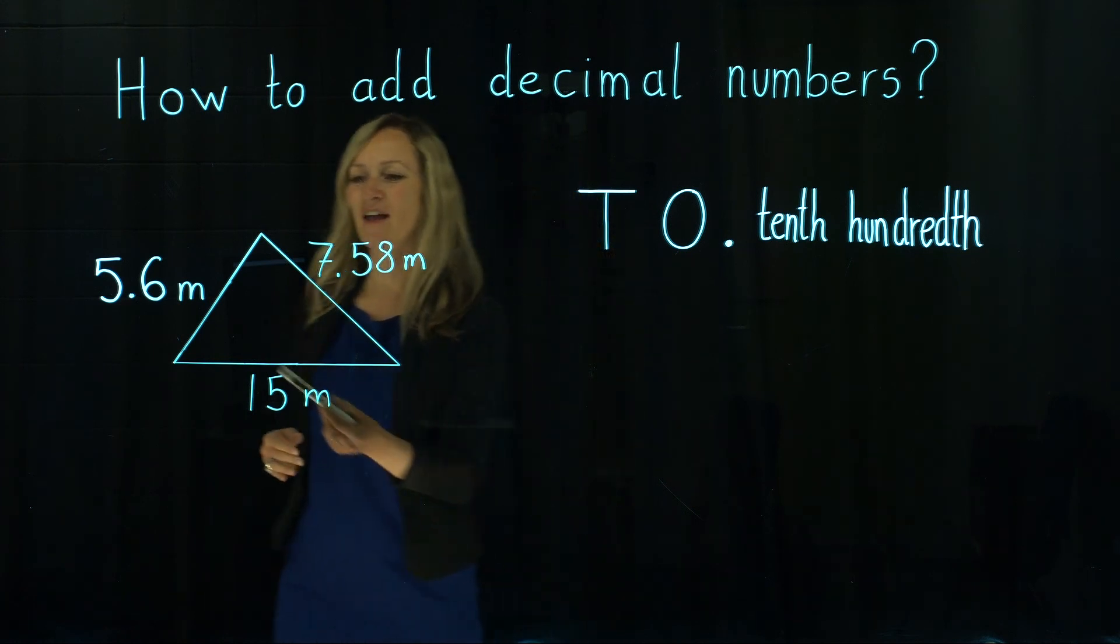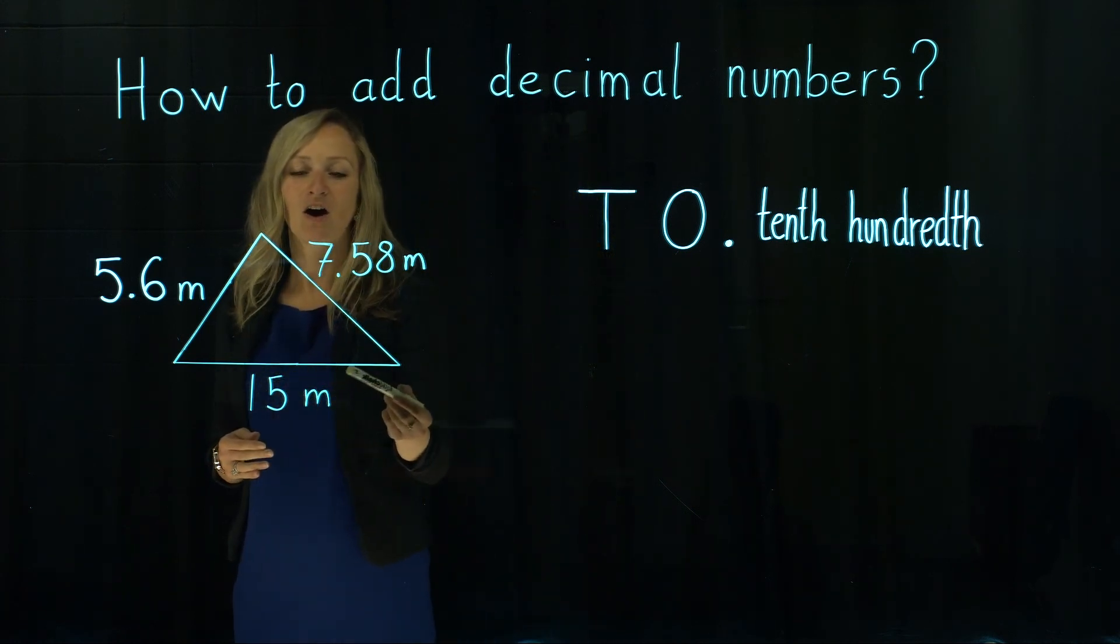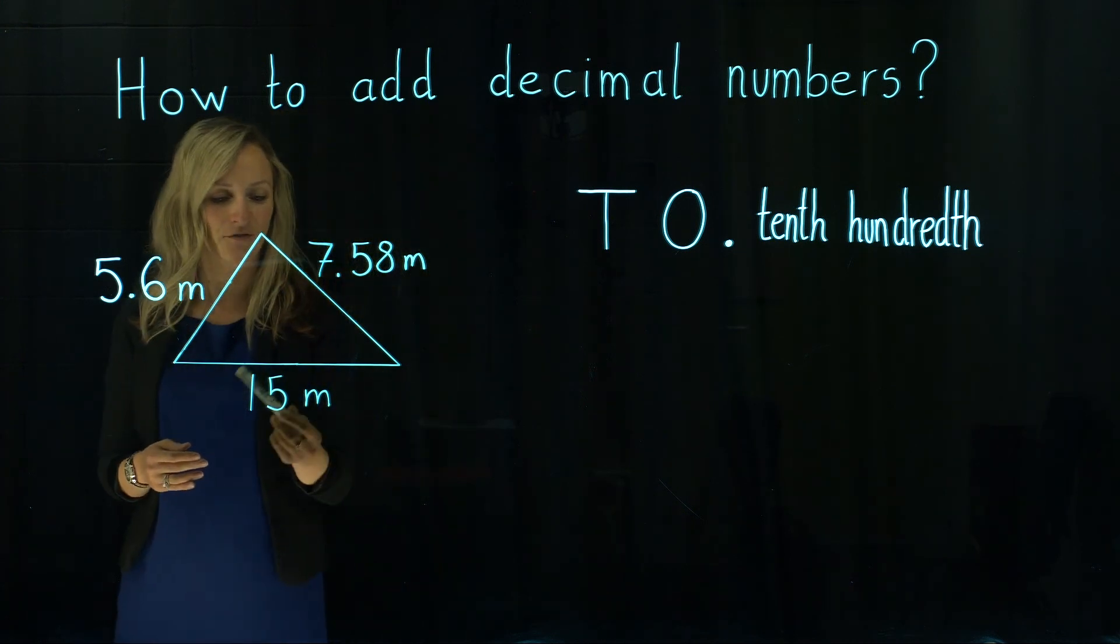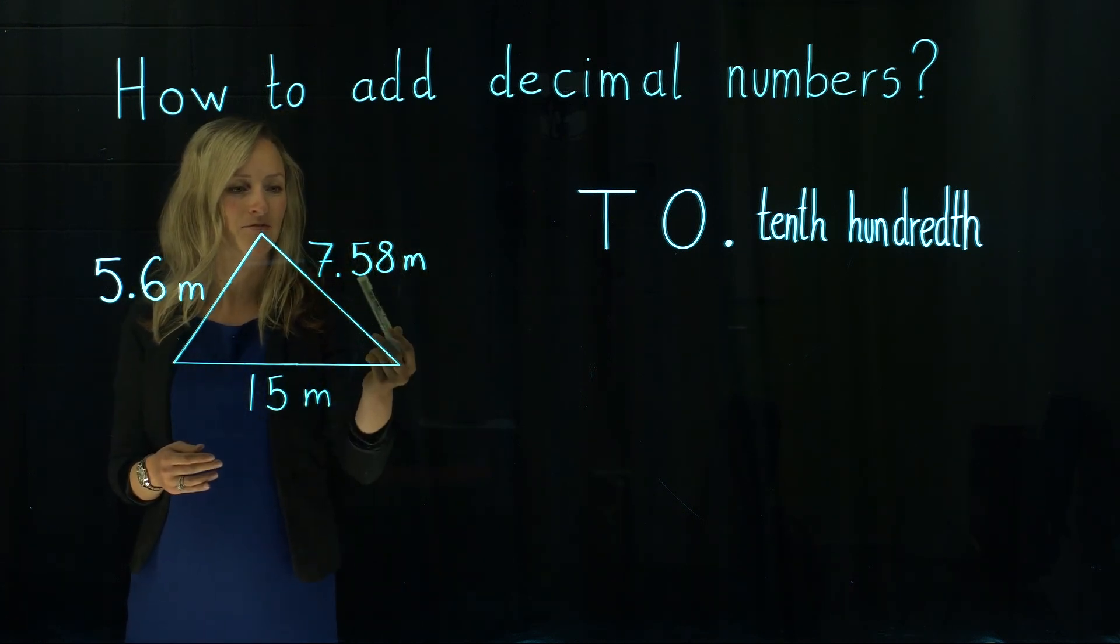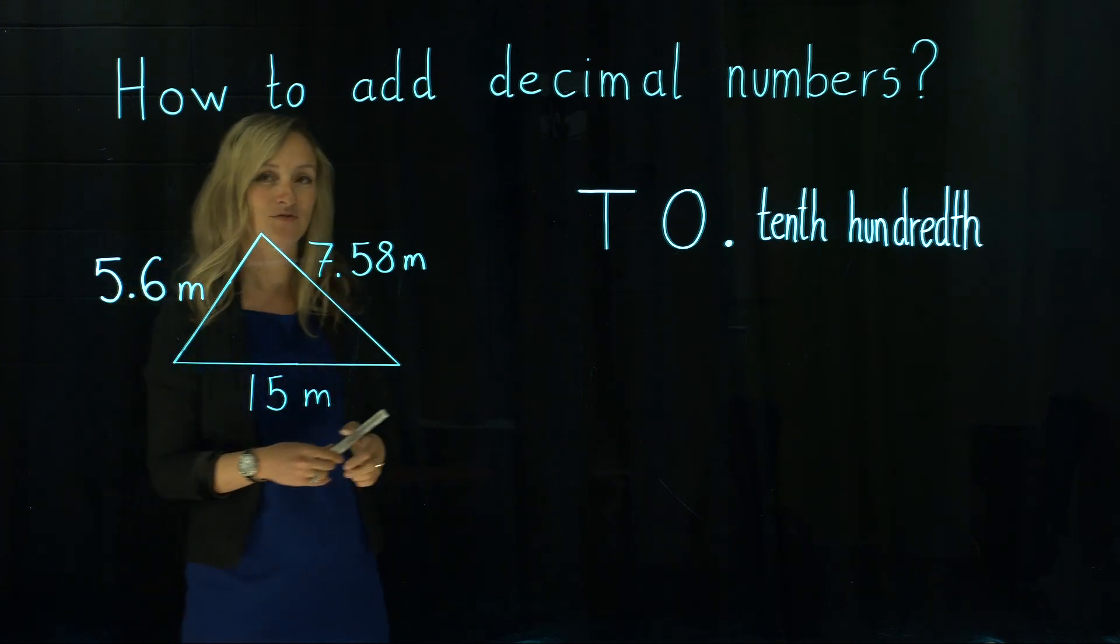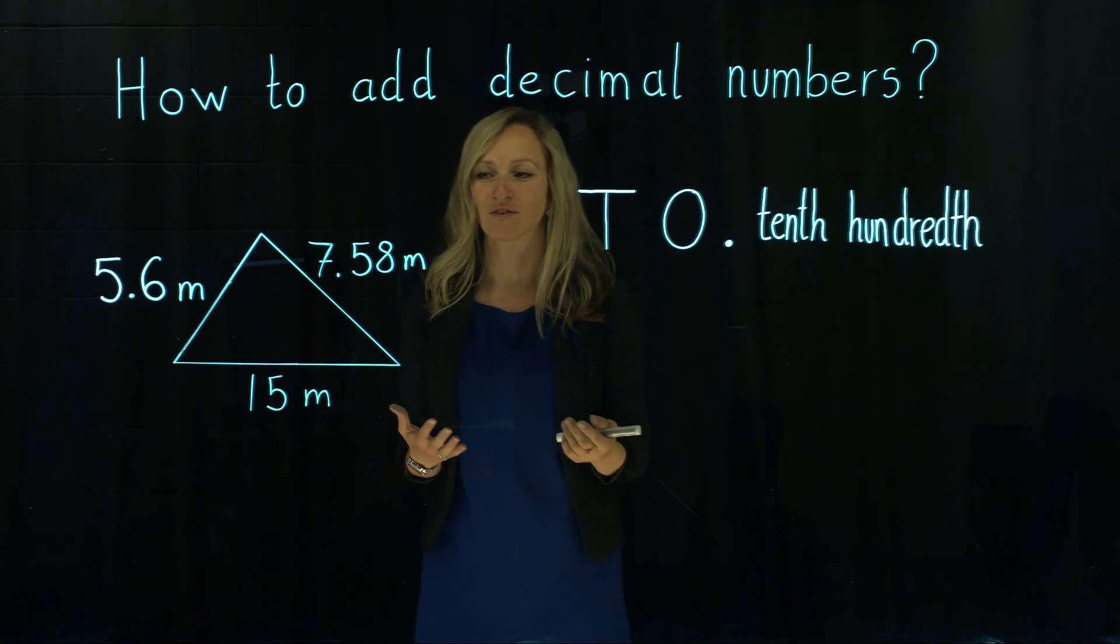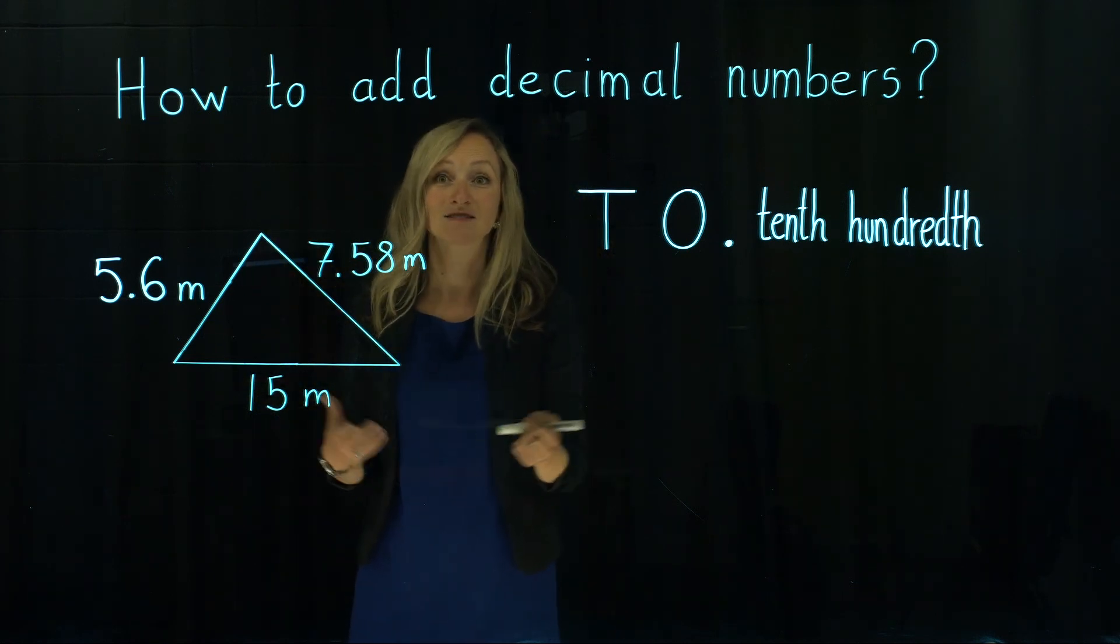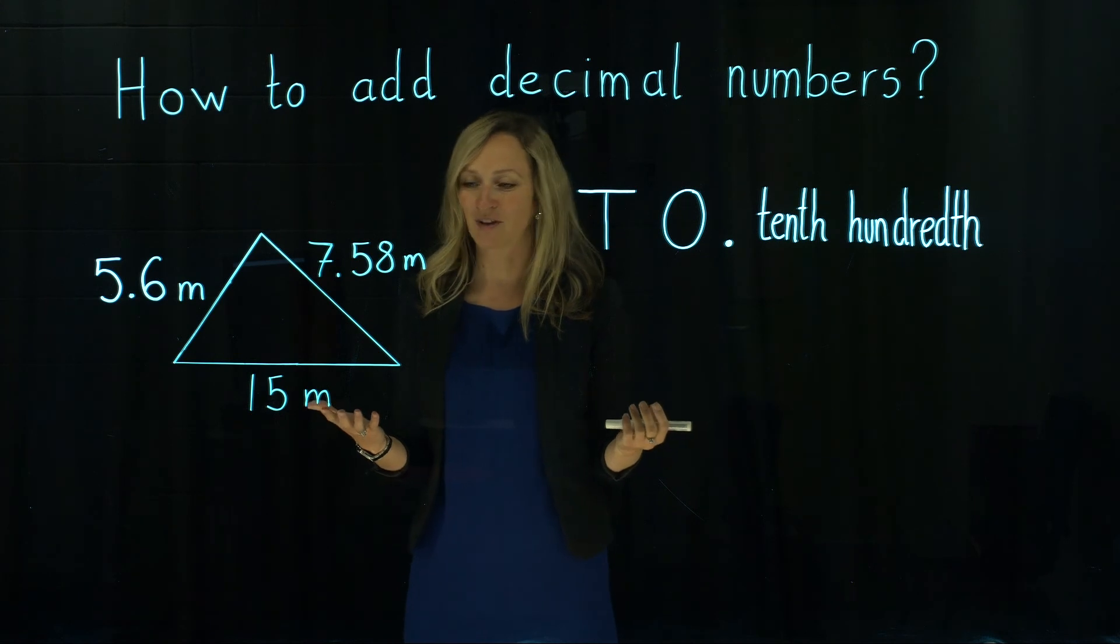One of the good examples is find the perimeter of an ordinary triangle which has got sides of 15 meters, 7.58 meters and 5.6 meters. To find the perimeter we actually need to find the total amount of all those three sides, so that means that we need to add them all together.